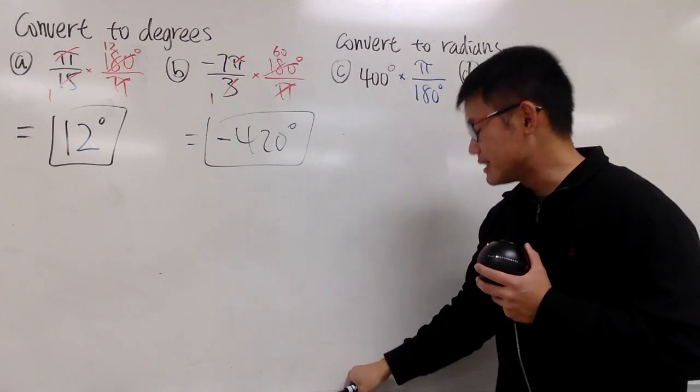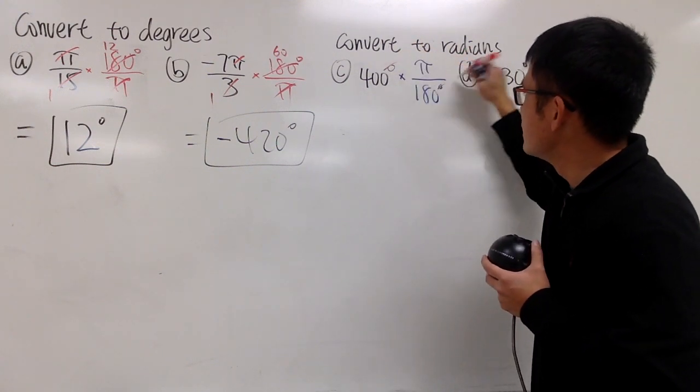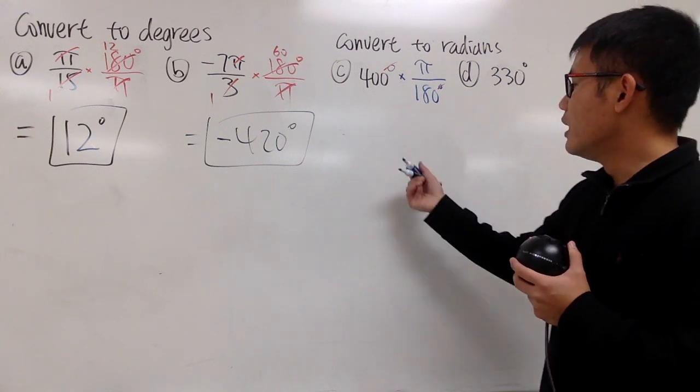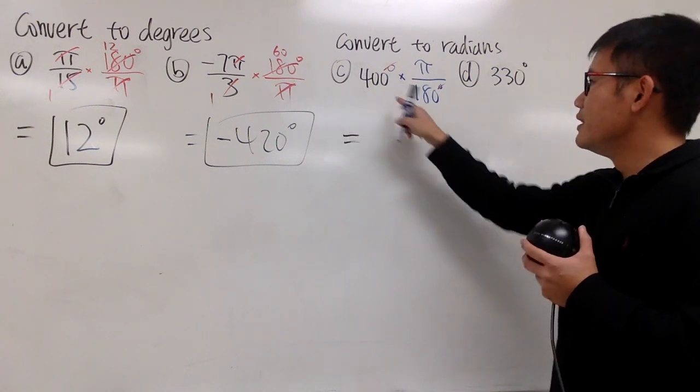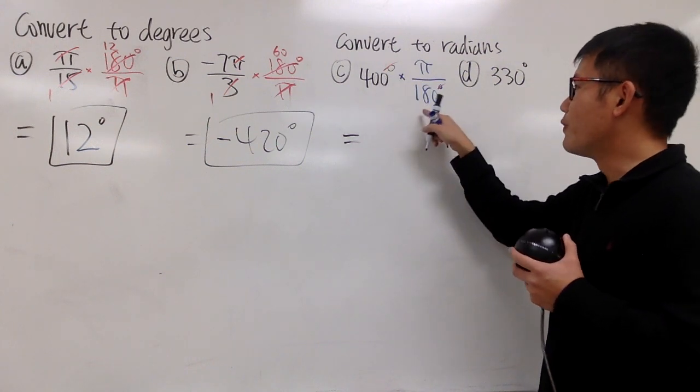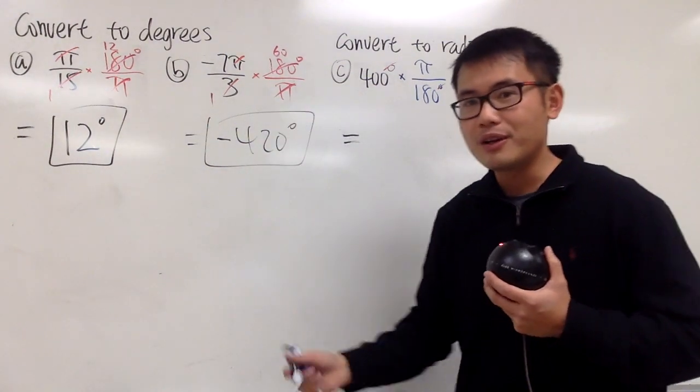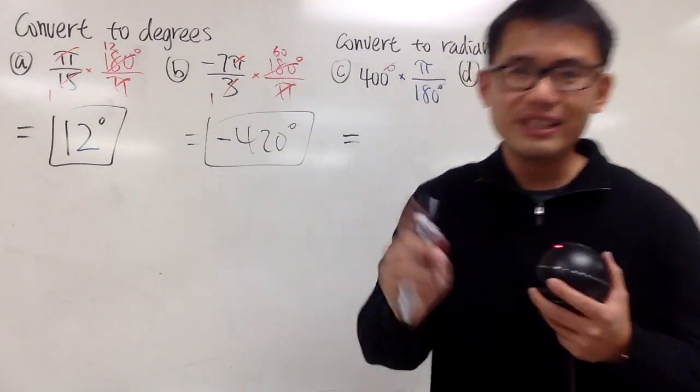And you see, this makes sense, because the degrees, the units, cancel each other out. And yes, we will have to do fractions. This is just 400 over 180. You can reduce the fraction. You can do it by hand, like how we did earlier. Or you can use your calculator. Let me show you.